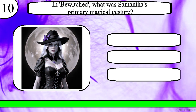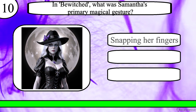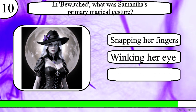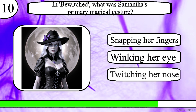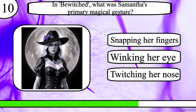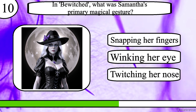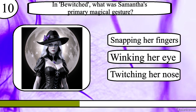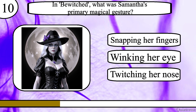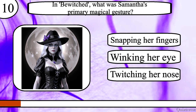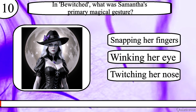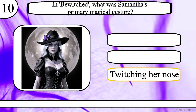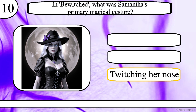Question 10. In Bewitched, what was Samantha's primary magical gesture? Snapping her fingers, winking her eye or twitching her nose? The correct answer is twitching her nose.